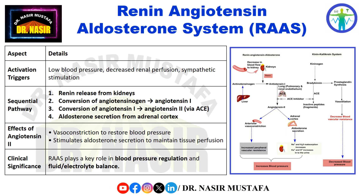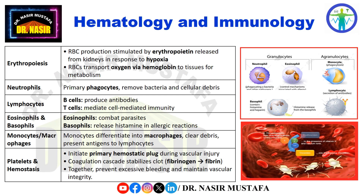Hematology and immunology. Red blood cell production, or erythropoiesis, is stimulated by the kidney's release of erythropoietin in response to hypoxia. RBCs are crucial for oxygen transport via hemoglobin, ensuring tissues receive adequate oxygen for metabolism. Neutrophils are the primary phagocytes, removing bacteria and cellular debris.